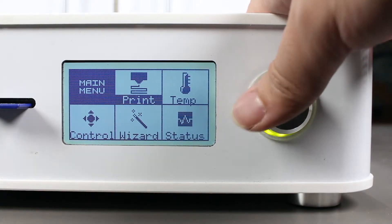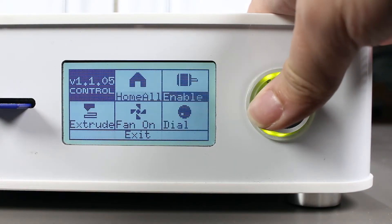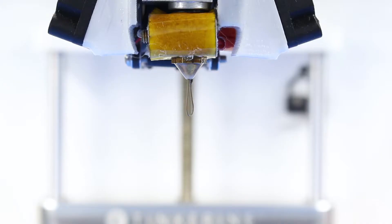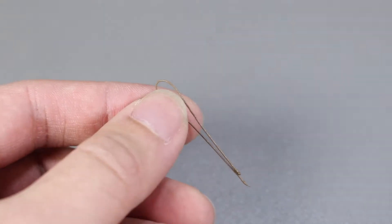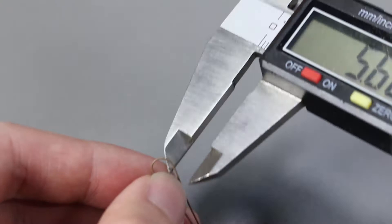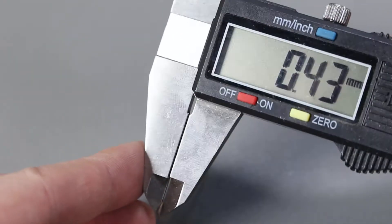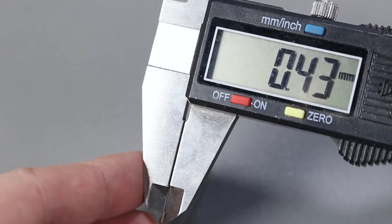So before we start, let's measure our nozzle diameter with the extrude wizard. The diameter of our nozzle is 0.43 millimeters. Now let's start the print.